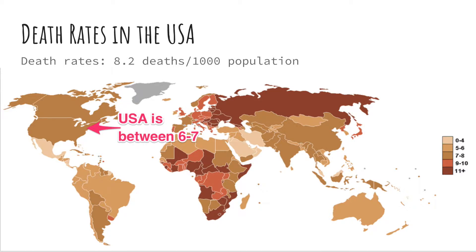The USA has a death rate of 8.2 deaths per 1,000 people. Compared to the rest of the world, we are placed 85th out of 226 for least deaths among the world. This could be because of a lack of healthcare in our country, which is not free, and it can also be correlated to education, because it actually lacks behind.